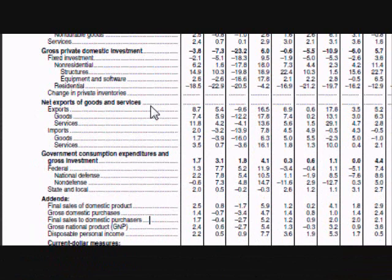The third main category is net exports of goods and services. When calculating GDP, the value of exports is added while the value of imports is subtracted. The US imports more than it exports, meaning it has a negative net export level — so the difference between imports and exports is subtracted from the GDP total. This means the level of supply produced by US companies does not meet the level of demand from consumers.